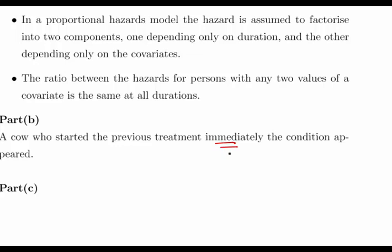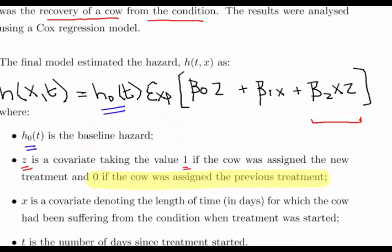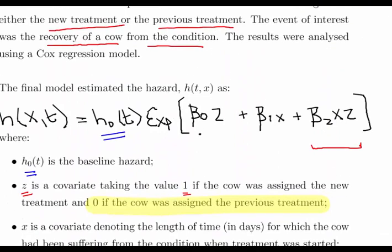I start the treatment immediately — I don't wait around. So looking at how that works in the model: beta zero times Z — that checks if the cow is on the new treatment. Whatever makes these terms zero causes them to disappear. Z equals zero means the cow is on the previous treatment. X equals zero means you start the treatment straight away. That is the baseline condition.